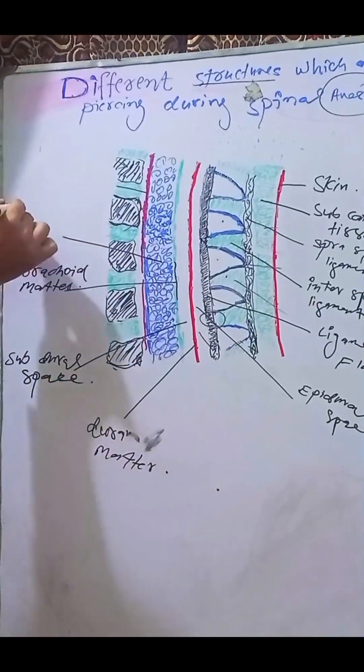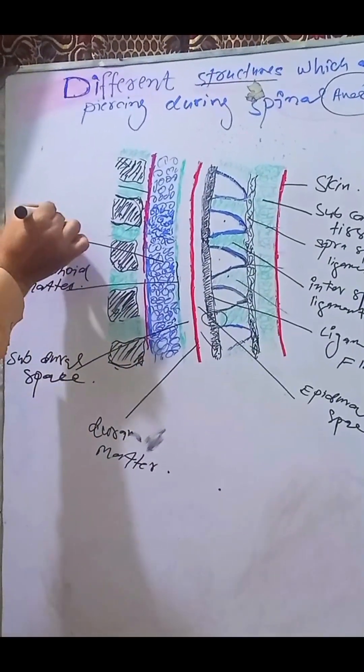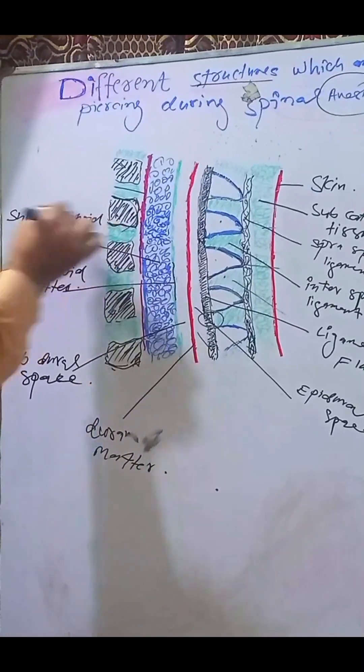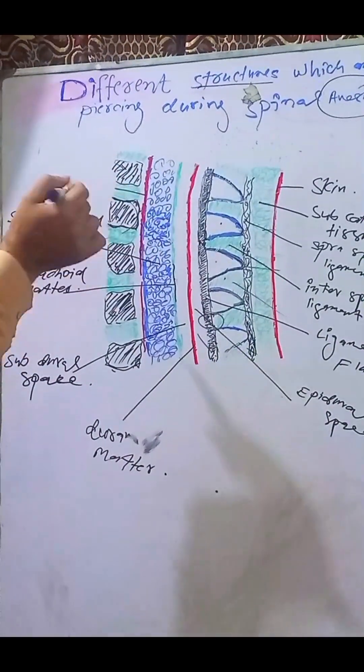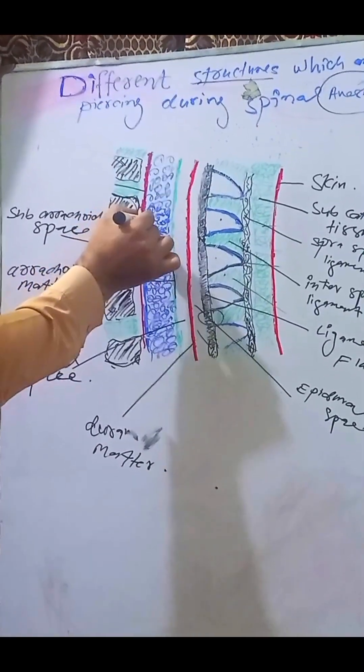This is the most important space which has the CSF, where we inject the local anesthetic to achieve the spinal block. This is CSF, I have drawn with blue color.